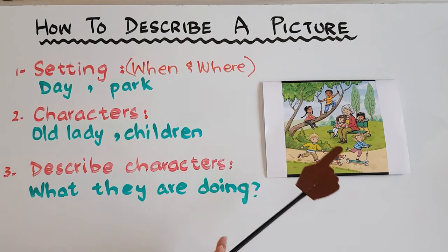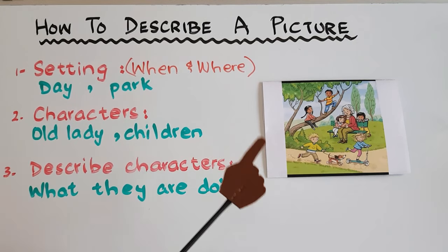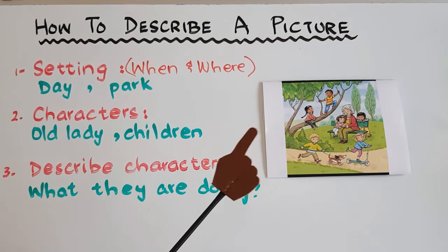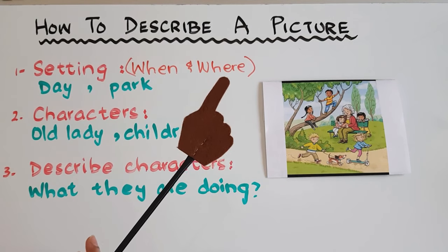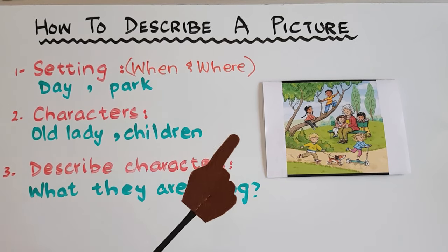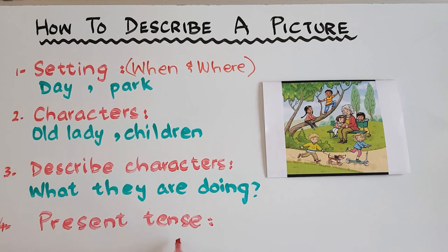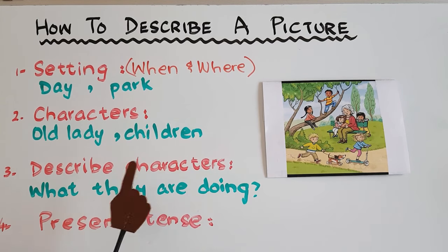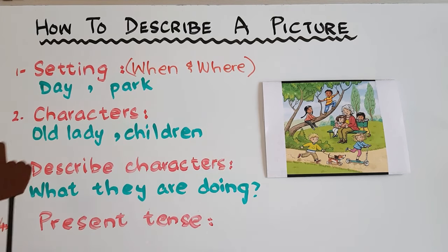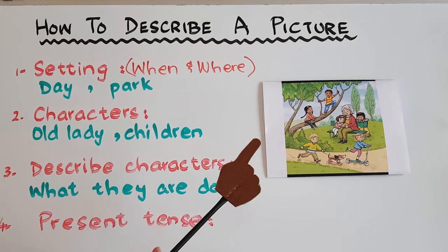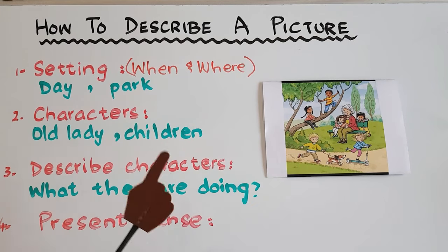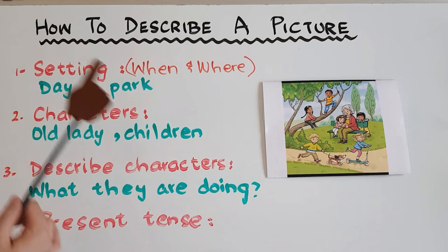Another important thing to tell children is that they should write in present tense only. At the beginning they must use present tense because it is the simplest tense and the first one we teach them. They should not jump from one tense to another — like the first sentence in present, then the next in past, then in future — unless it's really needed. So let's try to write a short paragraph with all these elements.